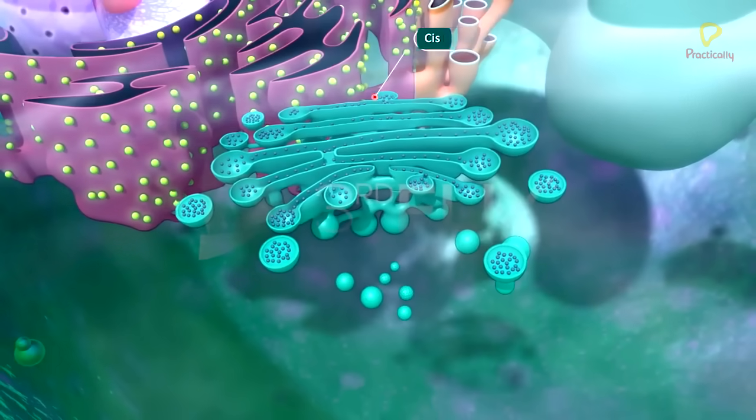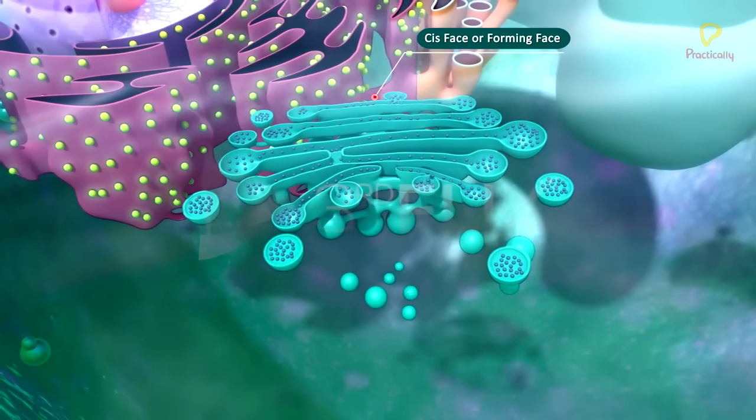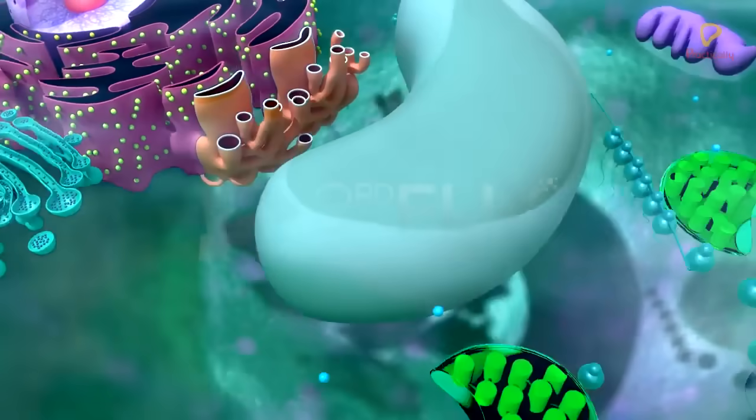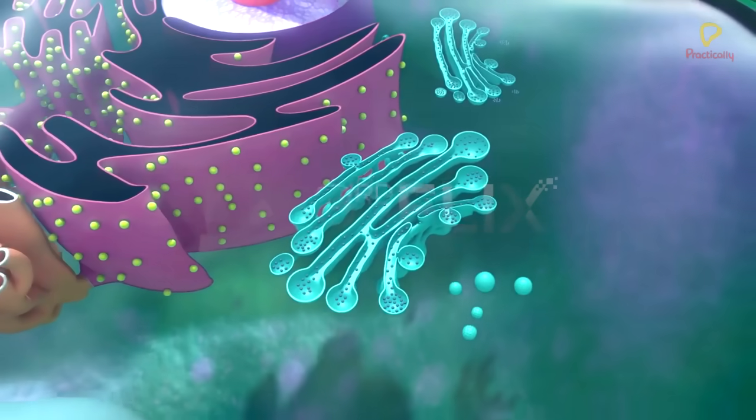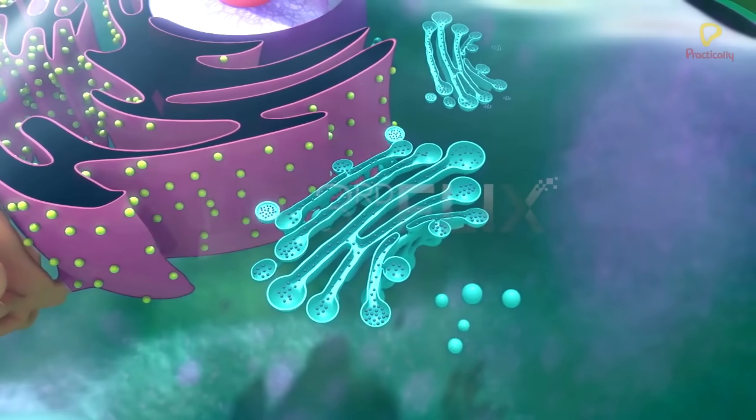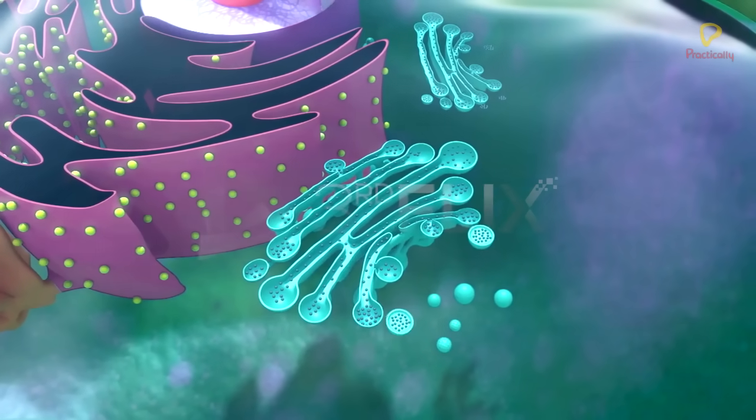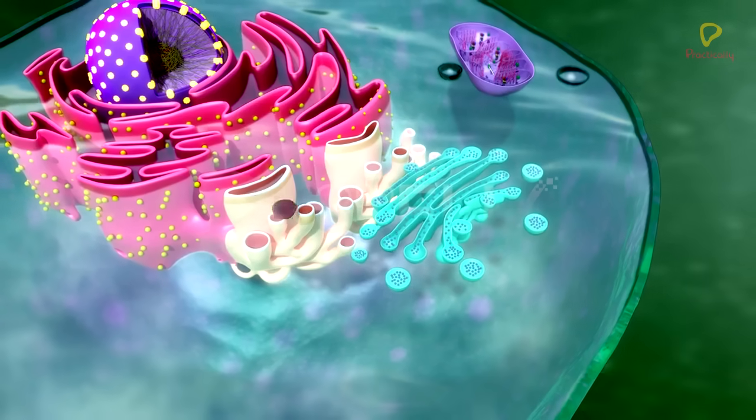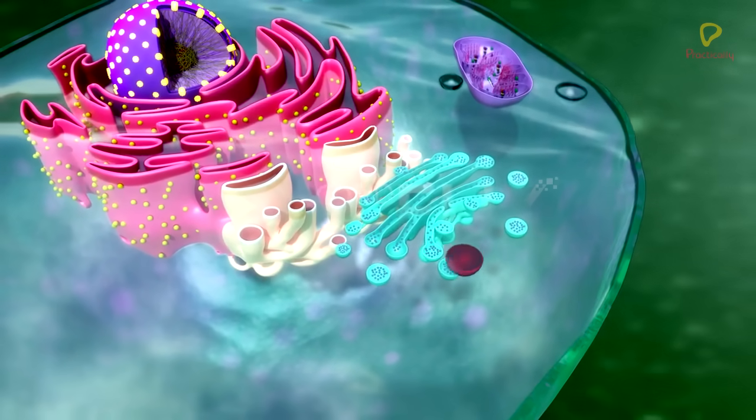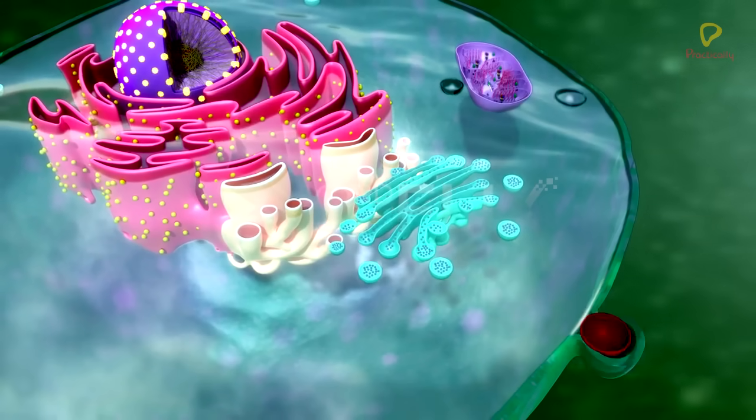The forming face of Golgi apparatus receives vesicles from endoplasmic reticulum. The contents of vesicles pass through various cisternae and reach the maturing face. The maturing face is normally towards the plasma membrane and gives out these contents in the form of Golgi vacuoles.